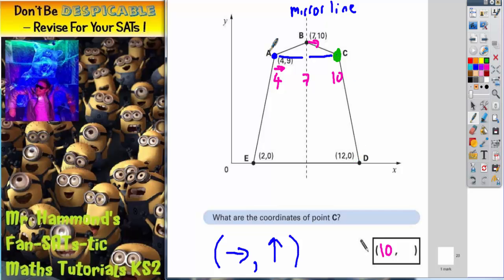It's the same distance up. Point C and point A are the same distance up. So if we know how far up point A is, we also know how far up point C is. And point A is 9 up.